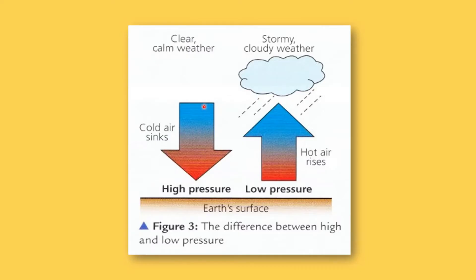Meanwhile, if air sinks, clouds are not formed and there isn't condensation taking place. Therefore, we get clear and calm weather, and this occurs where cold air is sinking. We call this high pressure because as the air sinks, it is pushing down on the ground. To summarise: rising air gives us clouds and rain, and falling air gives us nice conditions and clear skies.